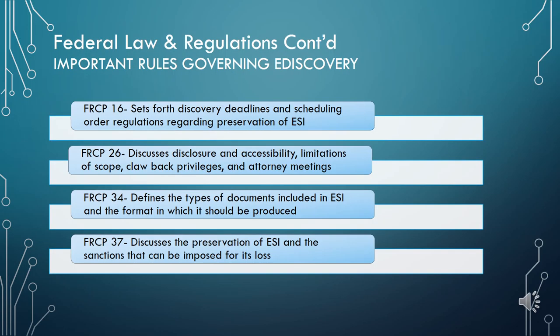Some of the biggest changes to the rules are broken down here. FRCP 16 requires that parties enter into a scheduling order within 90 days of the defendant being served. This scheduling order determines the deadlines for parties to provide for disclosure, discovery, or preservation of ESI. FRCP 26 lays out rules for accessibility — such as FRCP 26(a)(1)(B), which makes it mandatory for parties to disclose the location of ESI even before they receive discovery requests. Rule 26's amendments also include limiting the scope of discovery, addressing burdensome or costly eDiscovery, and the clawback provision wherein information must be returned if it was accidentally produced.